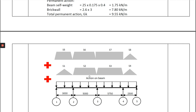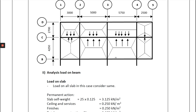We draw a diagram to identify which elements contribute load to the beam. In my case, there are three elements: the load on the beam itself, the slab load from one side (slabs 1, 2, 3, 4), and the slab load from the other side (slabs 5, 6, 7, 8). Based on the slab condition, the slab load shapes are triangular, trapezoidal, or rectangular — depending on whether the slab is one-way or two-way.